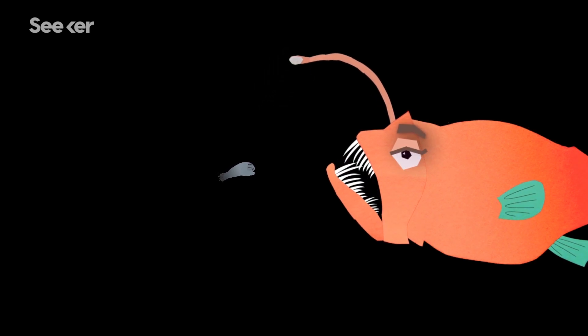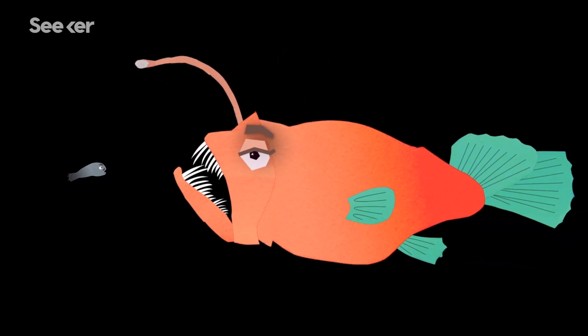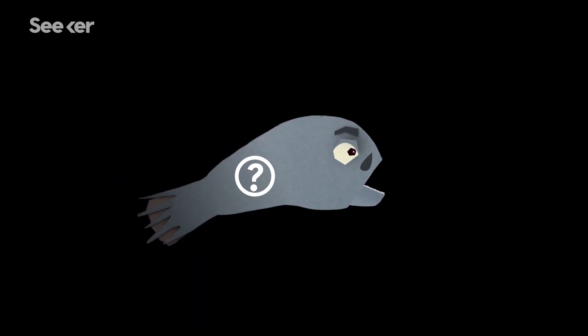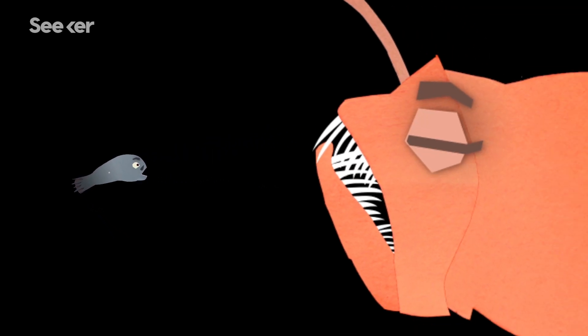When a male does find a female in the deep sea, he won't ever let her go. Because he can't. Some parasitic male anglerfish lack a working digestive system, so in order to survive, they need to tap into the resources of a female.